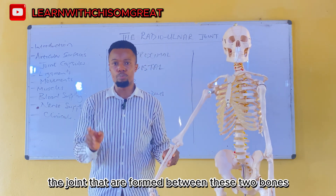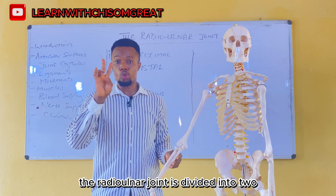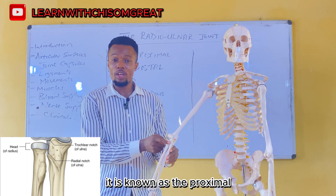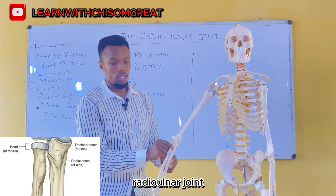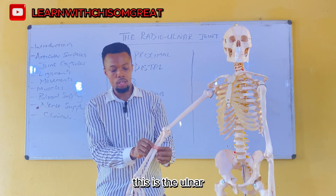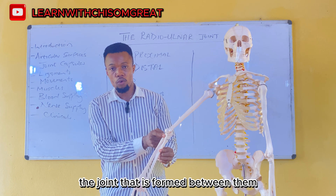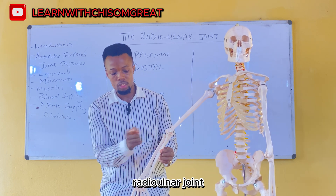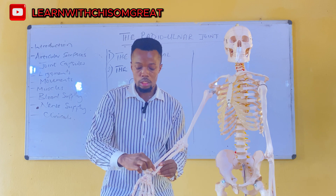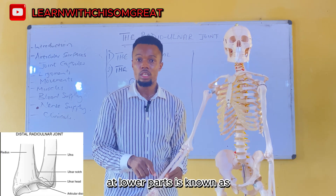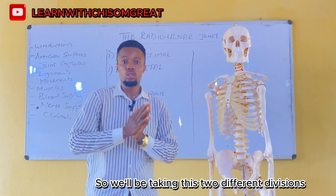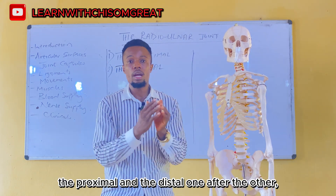The radioulnar joint is divided into two. We have the superior one, known as the proximal radioulnar joint, formed at the upper part. Then coming to the lower part, the joint formed between the ulna and radius at the lower part is known as the distal radioulnar joint. We will be taking these two different divisions, the proximal and the distal, one after the other.